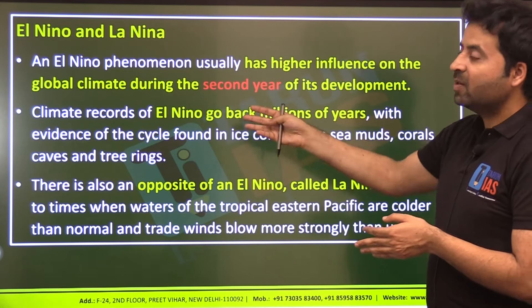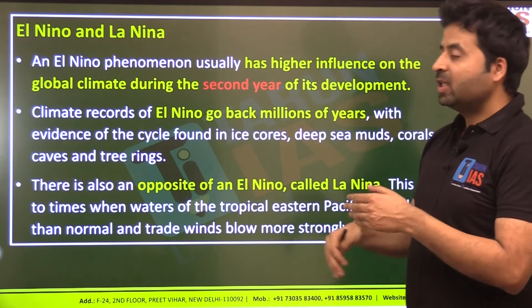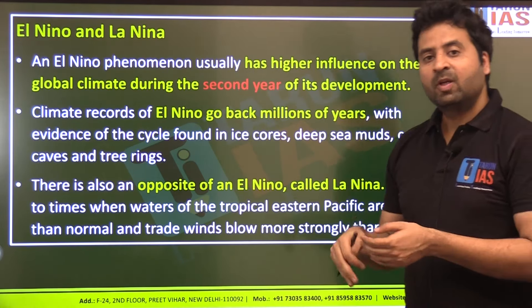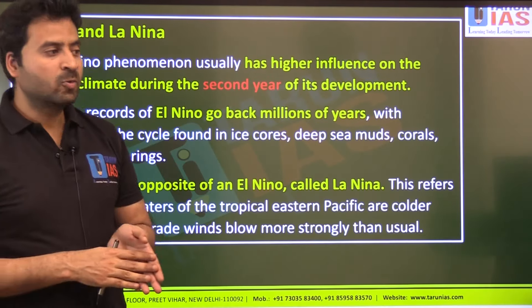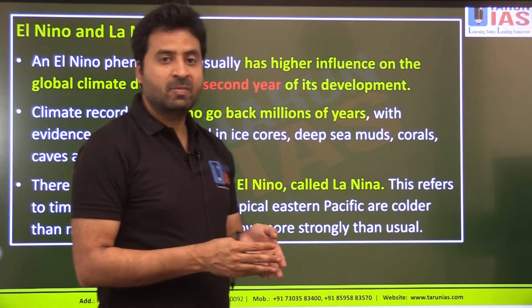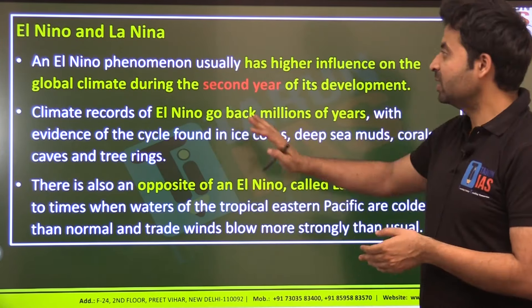El Niño is defined as abnormal warming of at least 0.5°C above usual in the central and eastern tropical Pacific Ocean. It occurs every 2 to 7 years; during a strong El Niño, temperatures can be up to 3°C above normal. El Niño creates a miniature global warming effect across the globe due to temperature increase in the world's largest ocean, and it has its highest influence on global climate during the second year of its development.